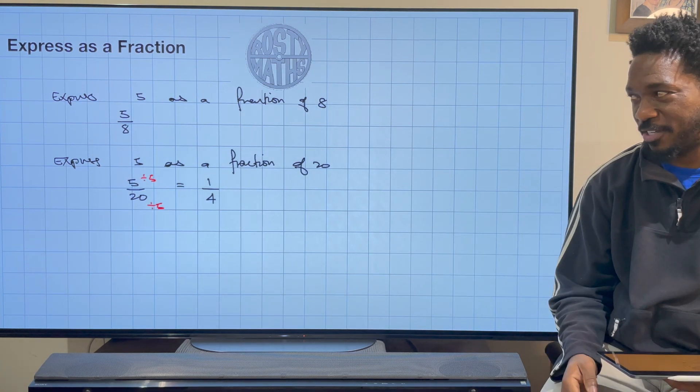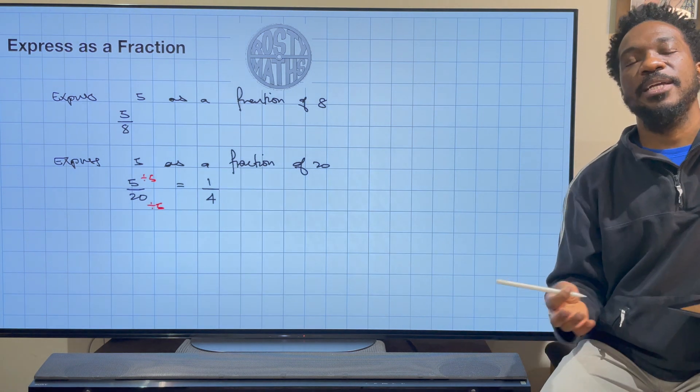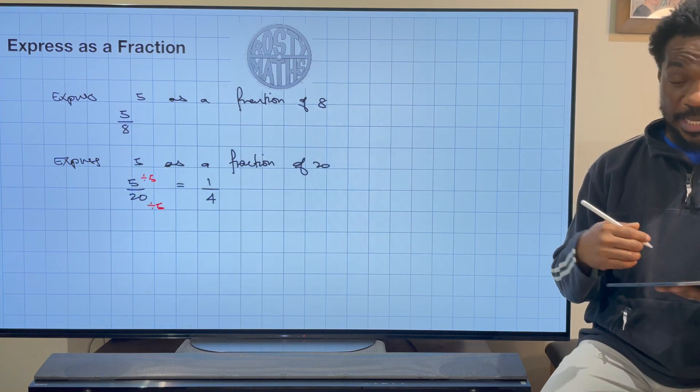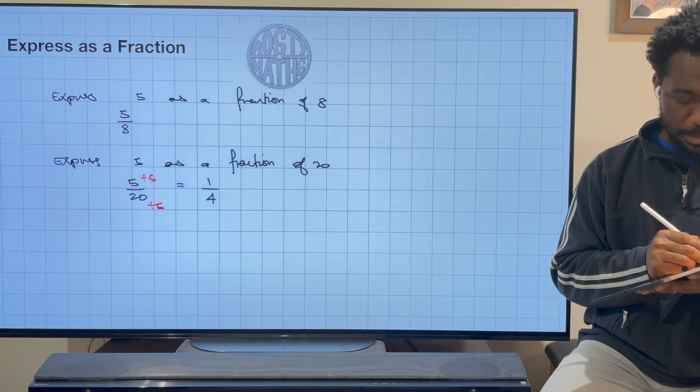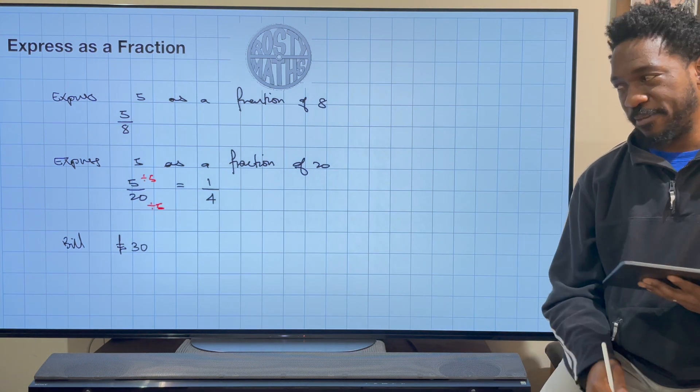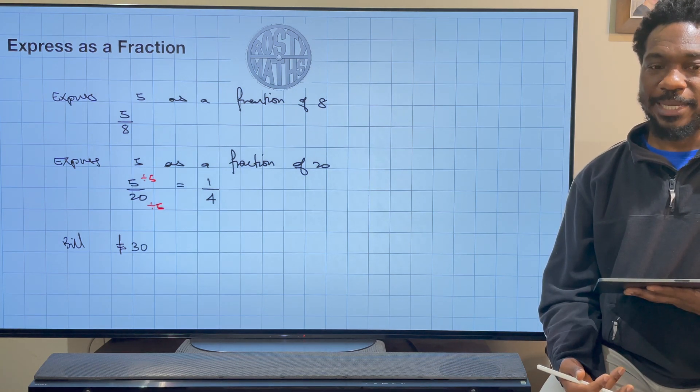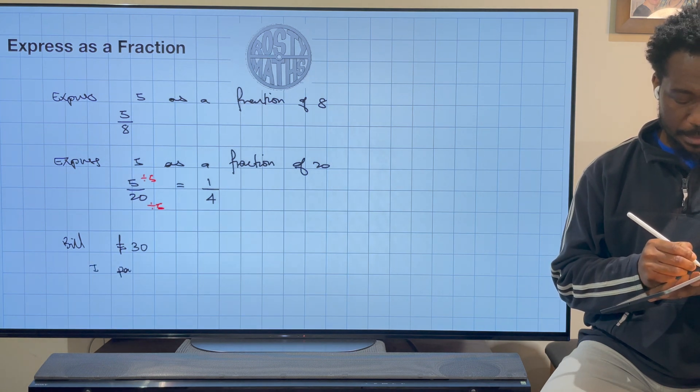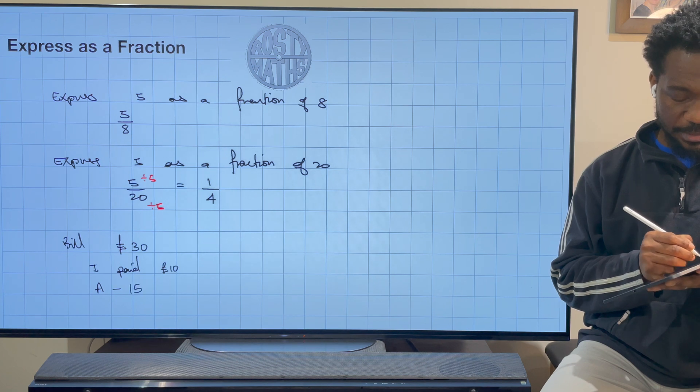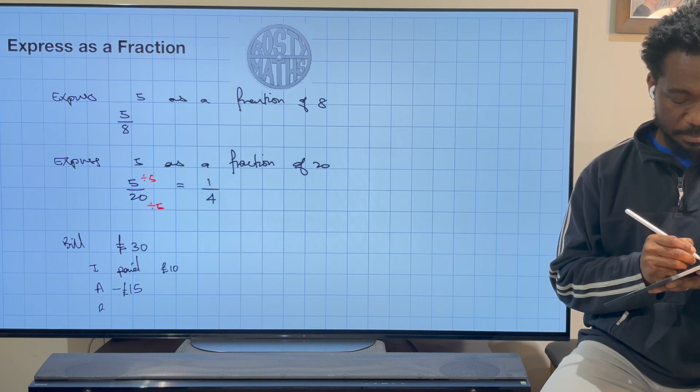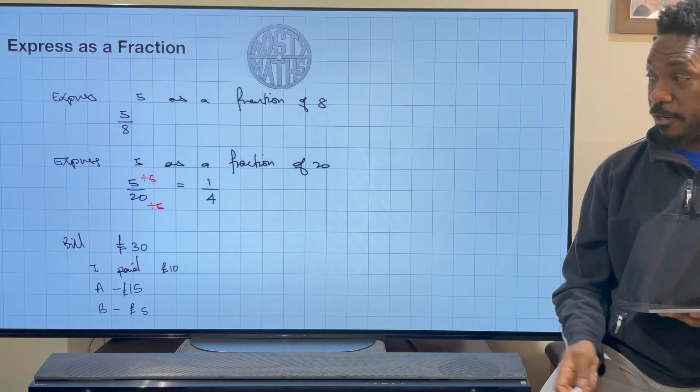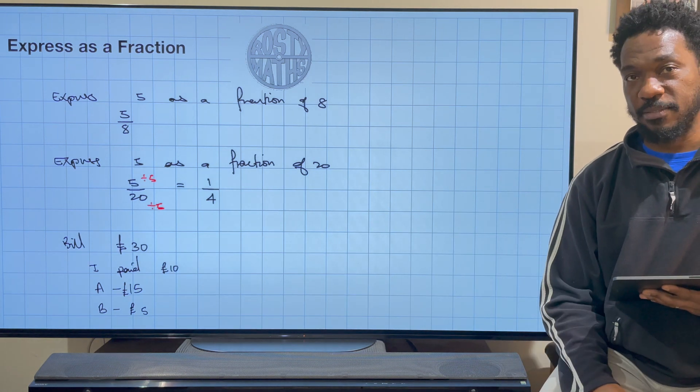All right, cool. Let's have a couple of real life examples. Okay, so my friends and I, we went out for dinner one day and it was three of us out there for dinner. The bill came up to a grand total of 30 pounds, that was the bill for the three of us. And then we decided that we're going to pay off the bill like this.